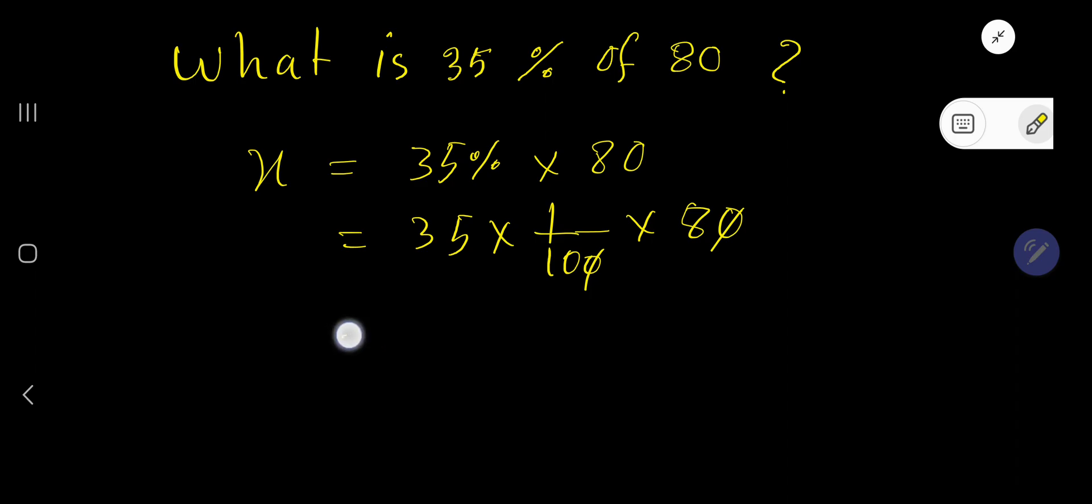So we're getting 35 times 1 over 10 times 8. Look, this is divisible by 5, this is also divisible by 5. If you divide this by 5 we'll get 2, if you divide by 5 you'll get 7.